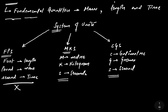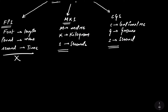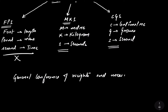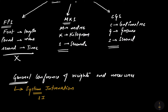Because different countries follow different sets of units, there are certain confusions in measuring scientific data from one country to another. So we have an organization called the General Conference of Weights and Measures. This organization has given a set of units accepted internationally all over the world, and we call it System International, or in short form, SI Units.